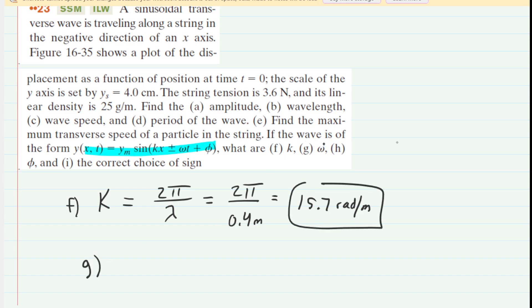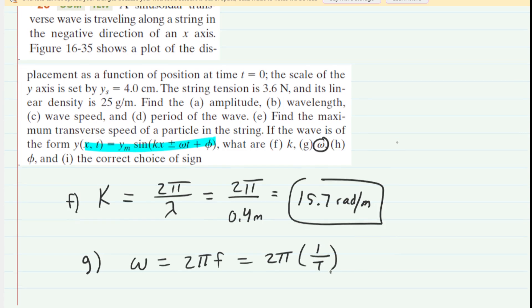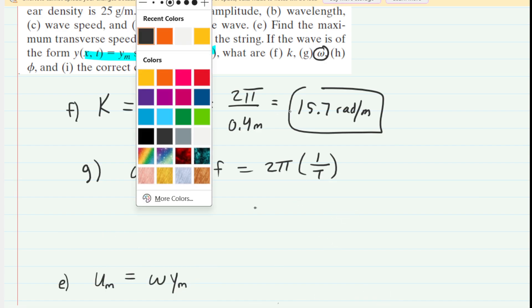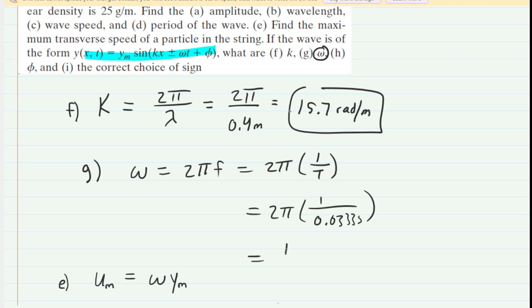In part G, we need to find omega. And you may recall earlier that we said omega is equal to 2 pi multiplied by the frequency f, which also is 2 pi multiplied by 1 over the period. And of course, we have the period. We established that earlier. So now all we need to do is plug in the period. And when we compute that, we get 189 approximately. And this is going to be in radians per second. So this is the correct answer to part G.